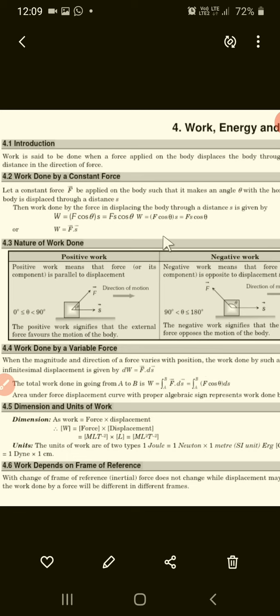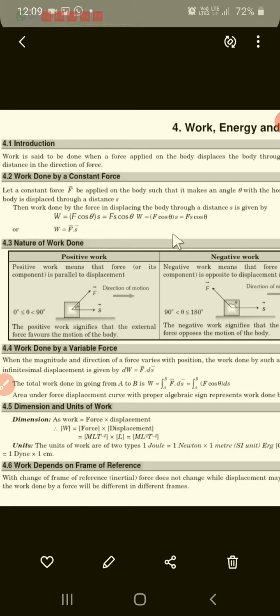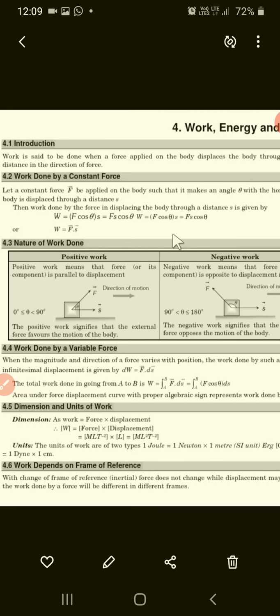Similarly, a coolie having some weight is going on a platform. Then what will be the work done by the coolie? It must be zero. Why? Because force acting on the coolie due to weight is towards the earth, but the coolie is moving on the platform. So the angle between displacement and force acting on the coolie is 90 degrees.